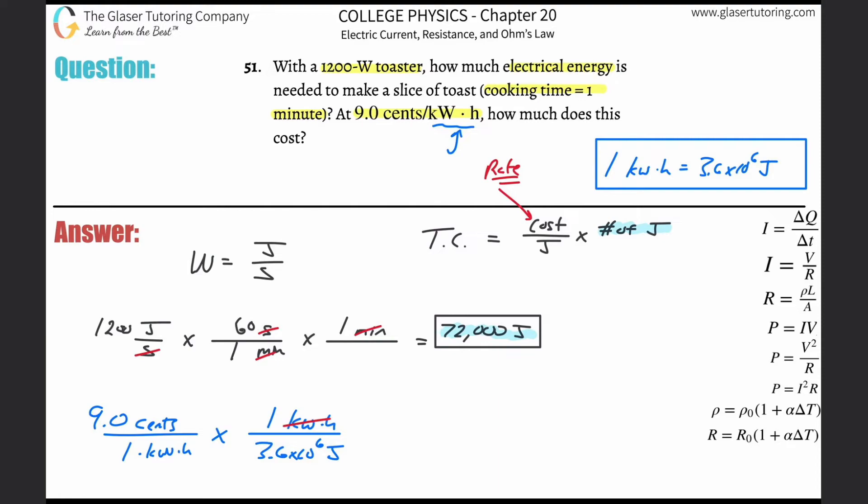I know that one kilowatt hour is equivalent to 3.6 times 10 to the 6th joule. Bye bye kilowatt hours, and now what I got is I have this value in terms of cents per joule. So 9 divided by 3.6 times 10 to the 6th, and this is going to work out to be 2.5 times 10 to the minus 6th, and this is now cents per joule. You can leave it in cents per joule or you can convert that into dollars per joule.